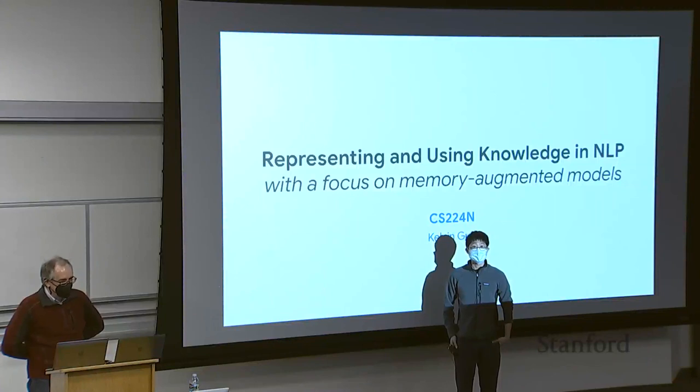I'm delighted to introduce our second invited speaker for CS224N, Kelvin Gu. Kelvin is a senior research scientist at Google with interests in retrieval-augmented language models and using knowledge in neural networks. He is perhaps best known for his work on the REALM model. Kelvin's background is as a statistics PhD, but he got drawn into natural language processing — a very good move.